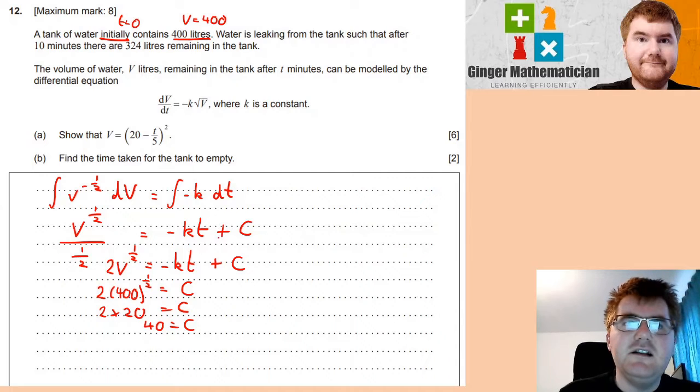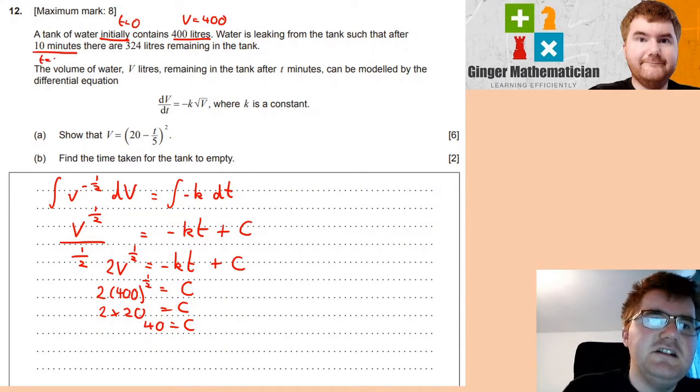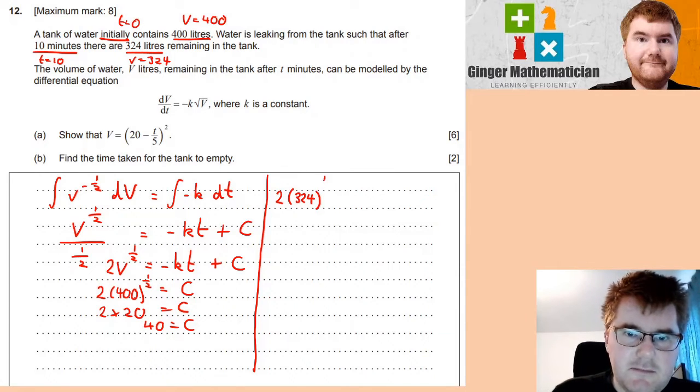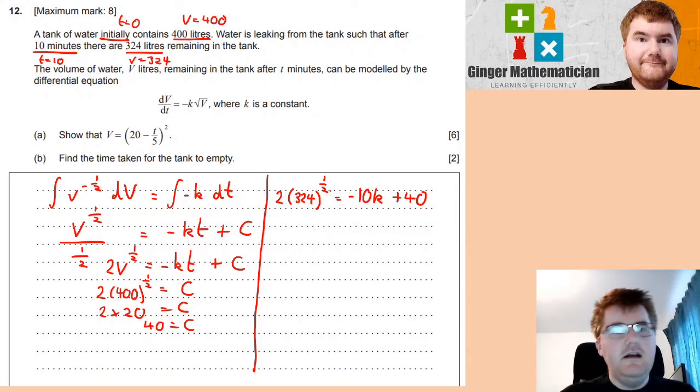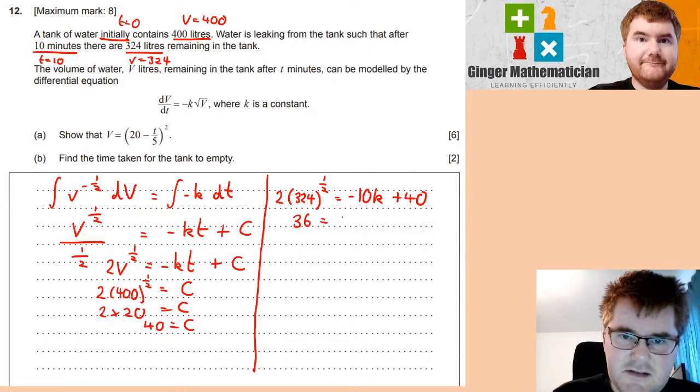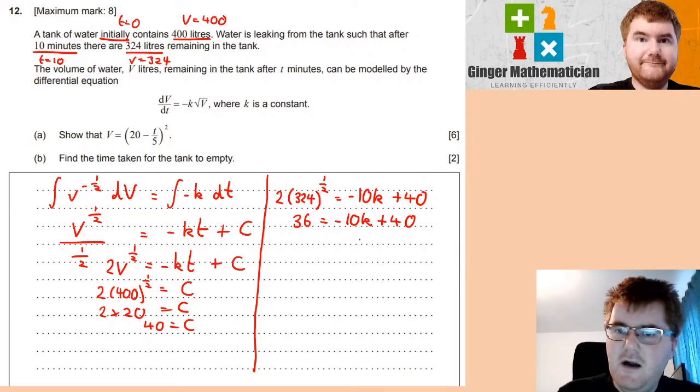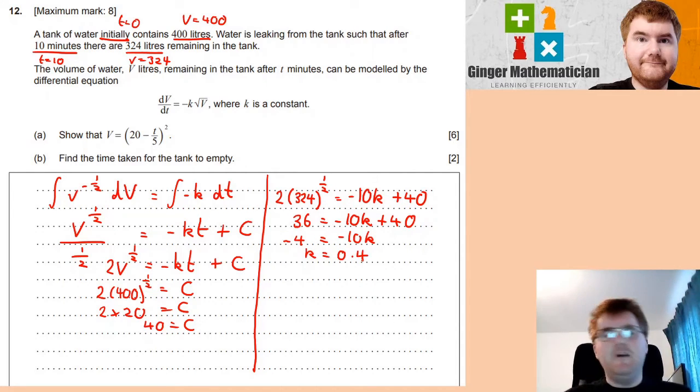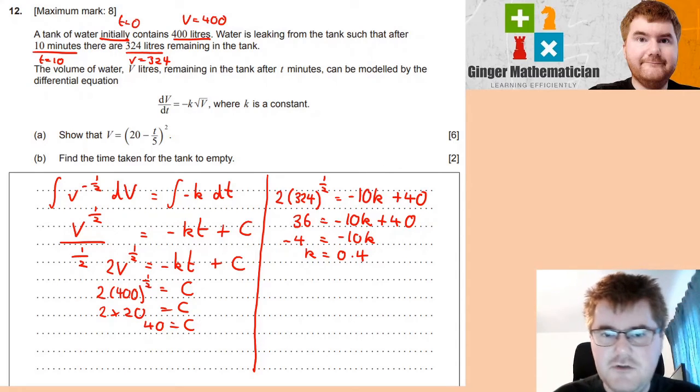Now, it's time to use our second bit of information. So, when T is equal to 10 here, then the volume is equal to 324. This will help us then work out what K is. So, let's substitute that in. So, we get two lots of 324 to the power of a half is equal to minus 10K. And now C is 40. And from here, we can just simplify this down. So, if we work out the square root of 324, that's equal to 18. 18 times 2 is 36. And we just get a straightforward equation to solve here. We're going to minus 40 from both sides, minus 10K. And that gives us 10K is equal to 0.4.